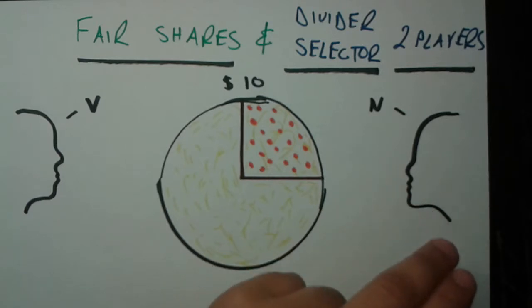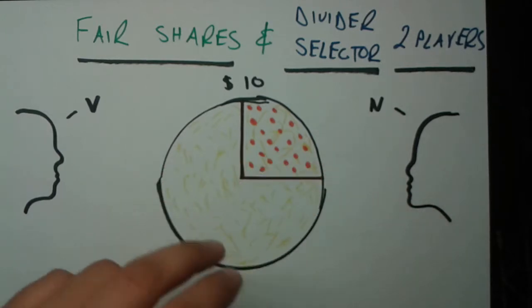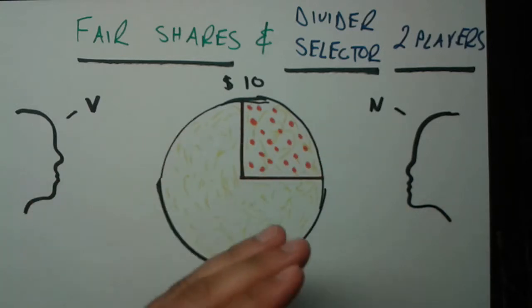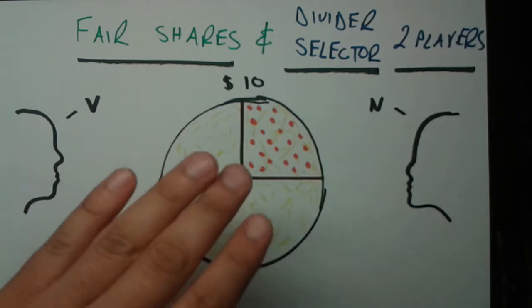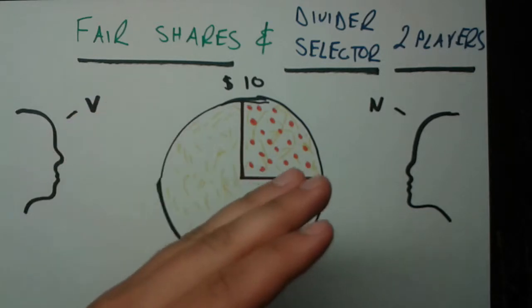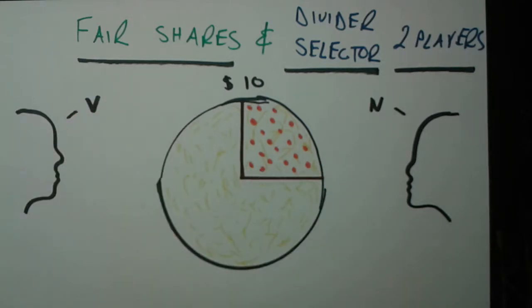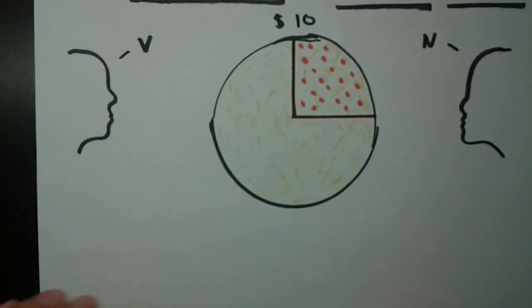Now, the person who's not vegetarian, it doesn't really matter how you divide it, the pizza is just overall worth $10. If we were to cut it in half anywhere, each half would be worth $5. That can include pepperoni or not pepperoni. Now a fair share we'll define as somebody getting more than half of the total value of the pizza in their own terms.